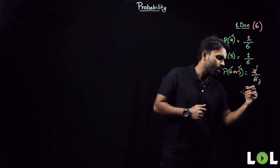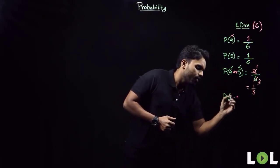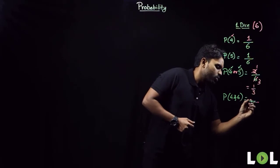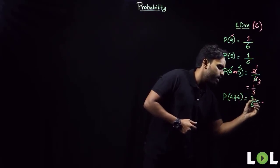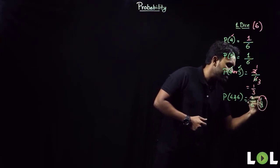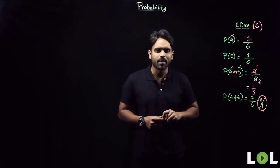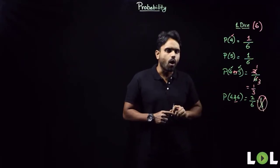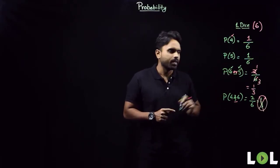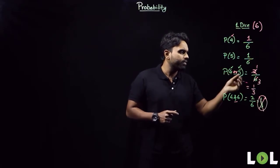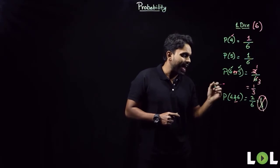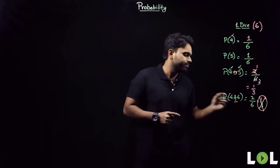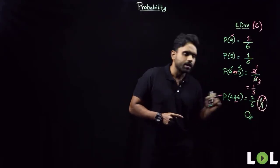Now, probability of getting a 4 and a 6: pay attention to the conjunction being used. Here I'm using 'or', so one among them should appear — probability of getting a 4 or a 5 gives favorable cases of 2. But when the conjunction is 'and', the probability of getting two numbers simultaneously while rolling only one die is zero.